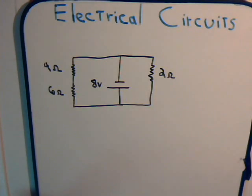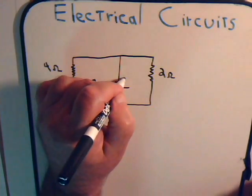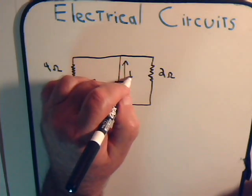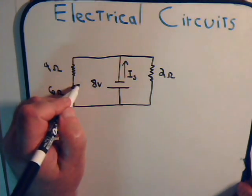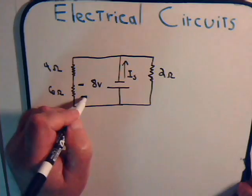Here it is, and what we want to determine is what is the source current that leaves the battery and what is the voltage drawn across this 6-ohm resistor.